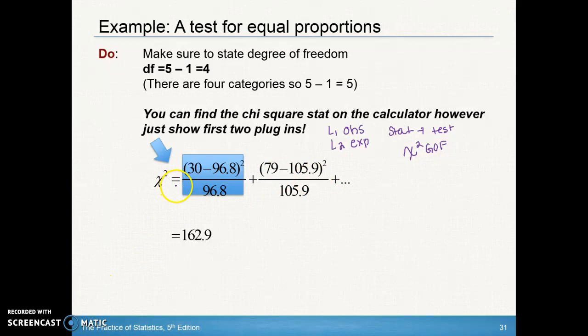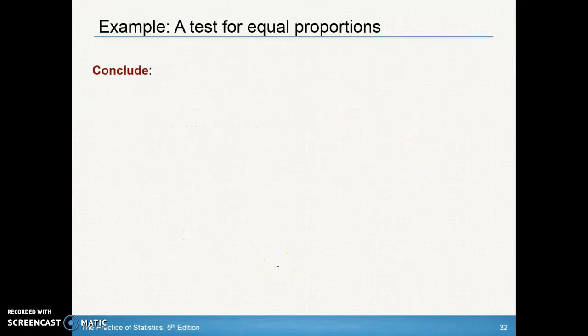However, what you will need to show for your work is two plugins. I don't care which two they are, they can be the first two, the last two, whatever. But always remember, it's your observed minus your expected squared, all divided by your expected value. So that's why you want to have those expected values there. Very easy for you to see. And then notice here, my chi-square statistic is 162.9. I got that from the graphing calculator.